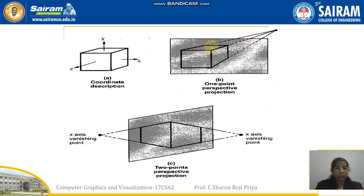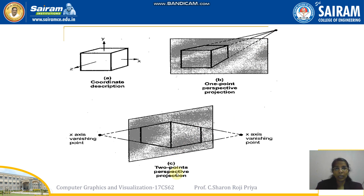In 1-point perspective projection, the projection lines are parallel to any one of the coordinate axes. In 2-point perspective projection, the projection lines are parallel to two axes — for example, these projection lines are parallel to the x-axis and converge at one point, while these projection lines are parallel to the z-axis and converge at another point. Similarly, we can have 3-point perspective projection.